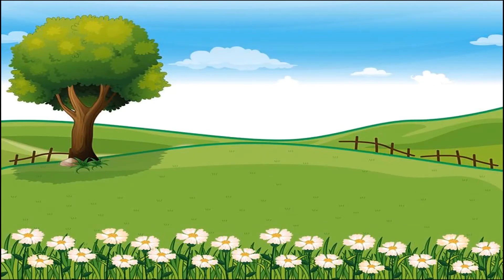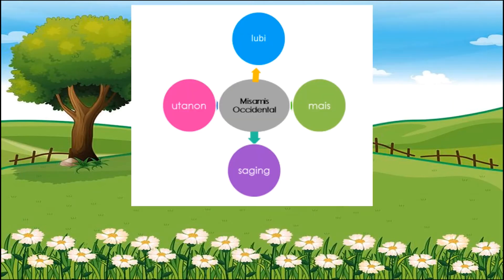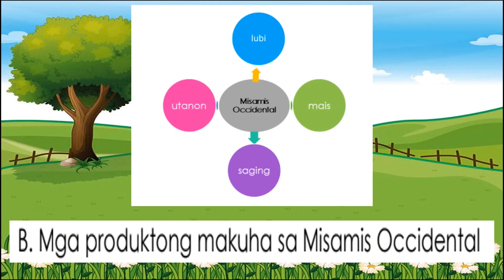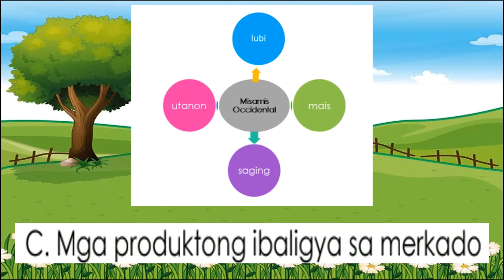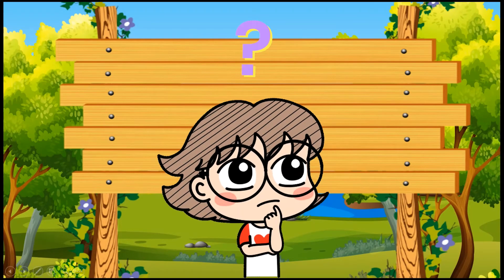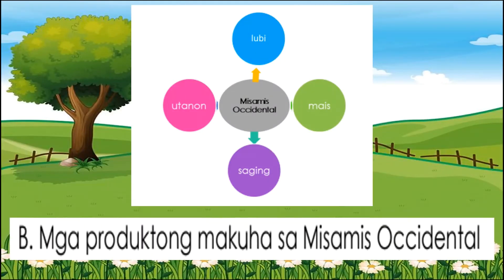Unsa nga information ang gihatag sa illustration? A. Mga produkto sa Oroquieta City. B. Mga produkto sa Oroquieta City. C. Mga produkto sa Oroquieta City. Letrang B ang saktong tubag.